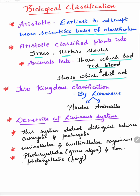Linnaeus proposed two kingdom classification, which included kingdom Plantae and kingdom Animalia. But there are some demerits of Linnaeus classification. The first is this system did not distinguish between eukaryotes and prokaryotes, unicellular organisms and multicellular organisms, and photosynthetic organisms like green algae and non-photosynthetic organisms such as fungi.